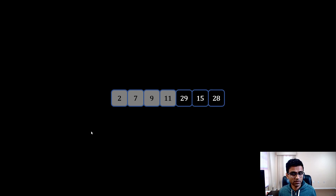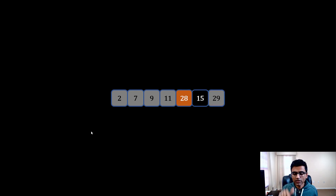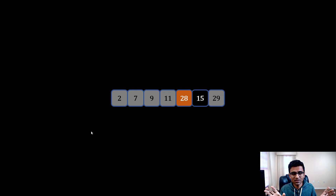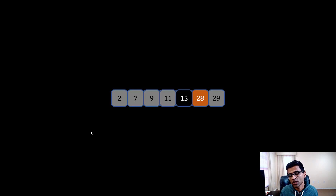Now let's look at the right hand side: 29, 15, and 28. We say 29 is the pivot and try to put it in its right position. This creates a left partition of 28 and 15, with nothing on the right. We repeat the same process recursively. This is a divide and conquer problem — we sort one element (the pivot), create left and right partitions, and recursively repeat. Eventually 28 is in its right position, leaving only single element 15, which is also sorted. The whole array is now sorted.